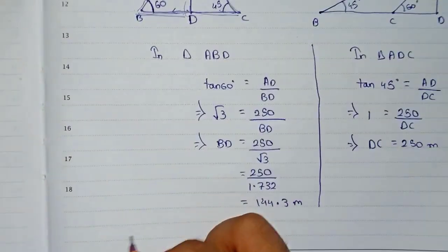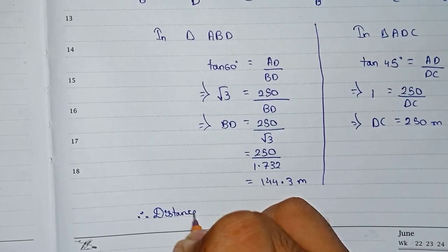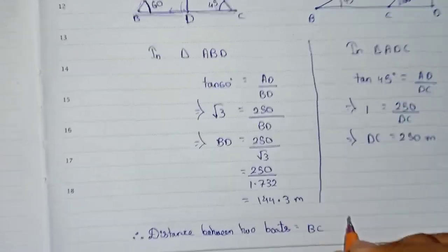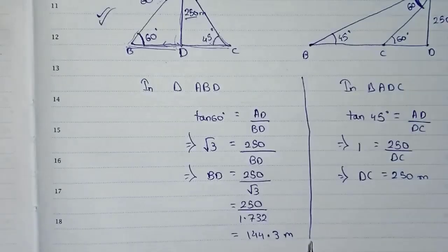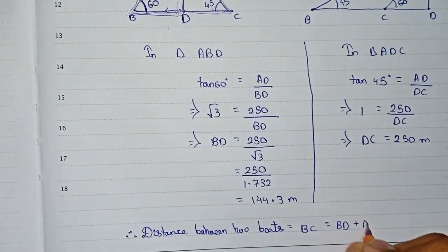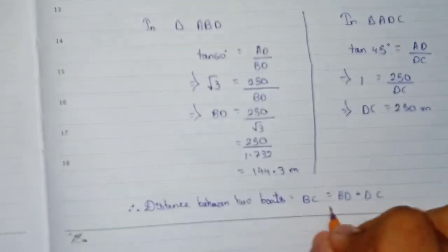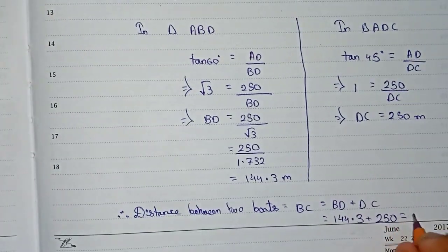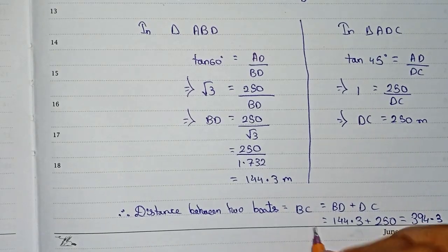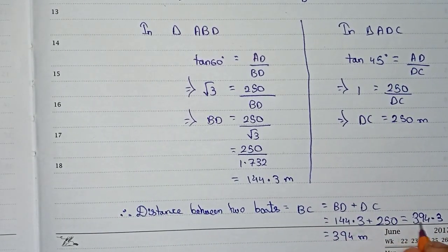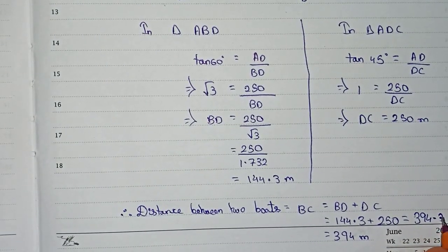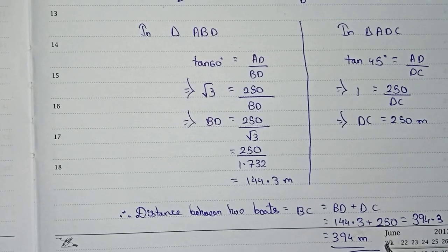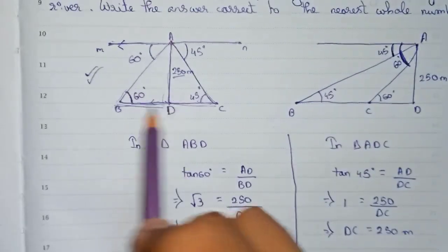So we have BD and DC. Therefore the distance between two boats, BC, equals BD plus DC, which is 144.3 plus 250, giving BC equals 394.3. Since we need the nearest whole number, the answer is 394 meters. This is the answer when the aeroplane is between the two boats.